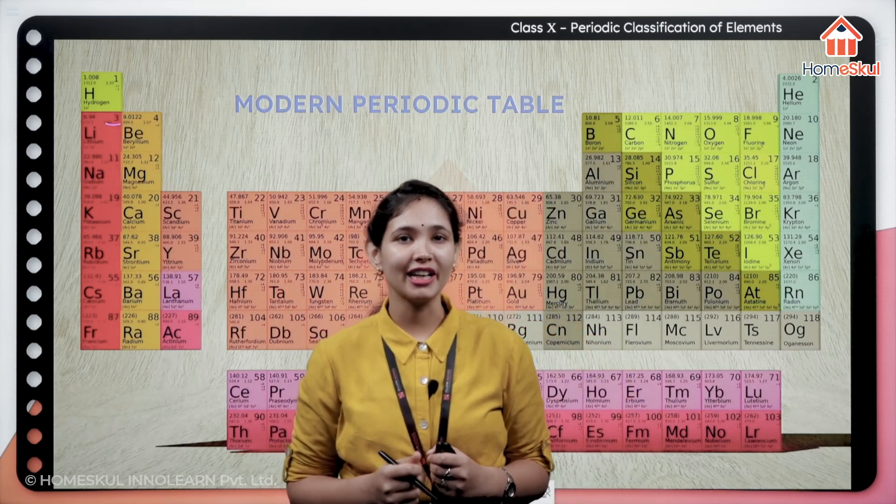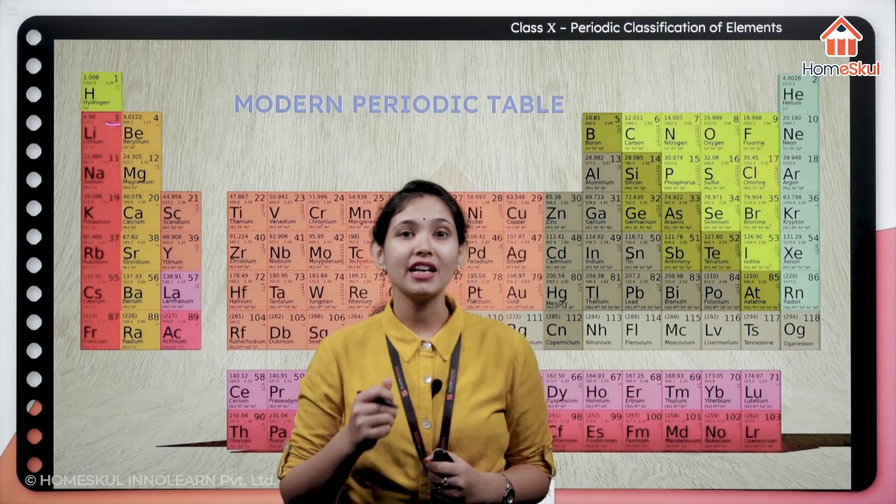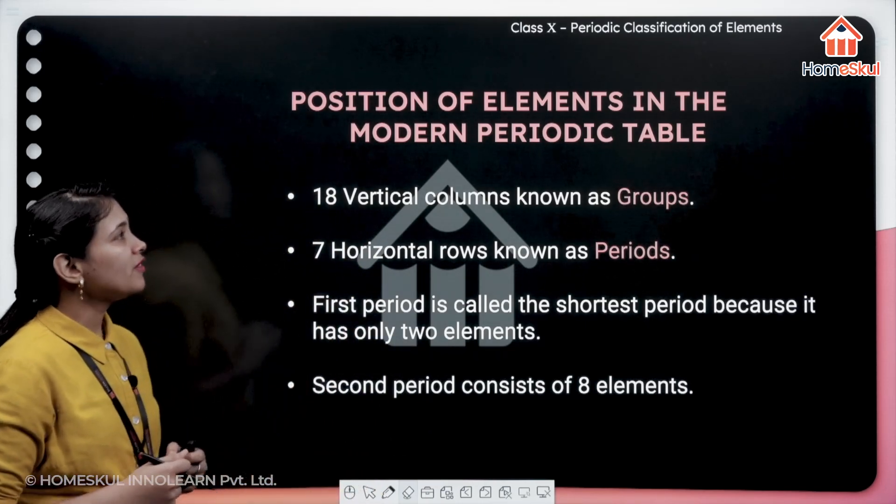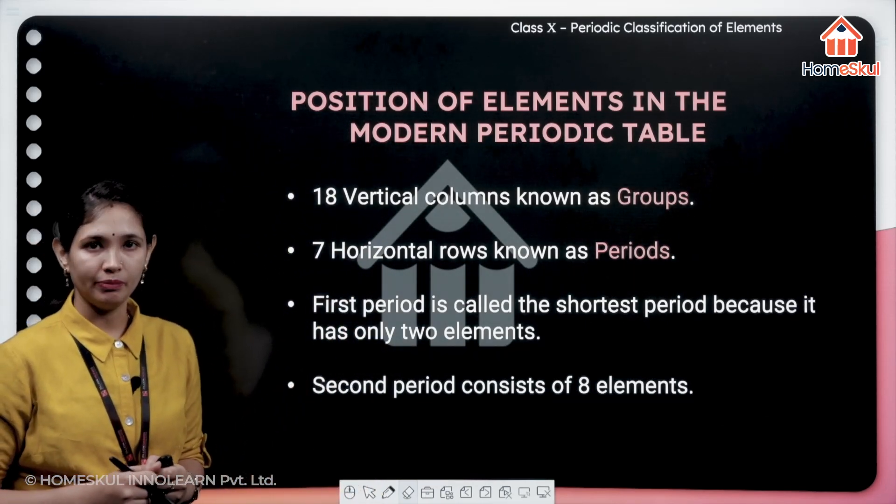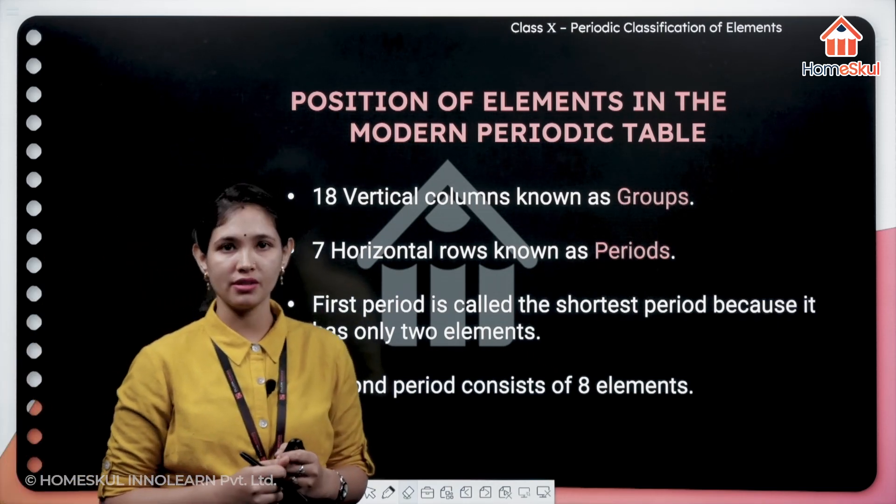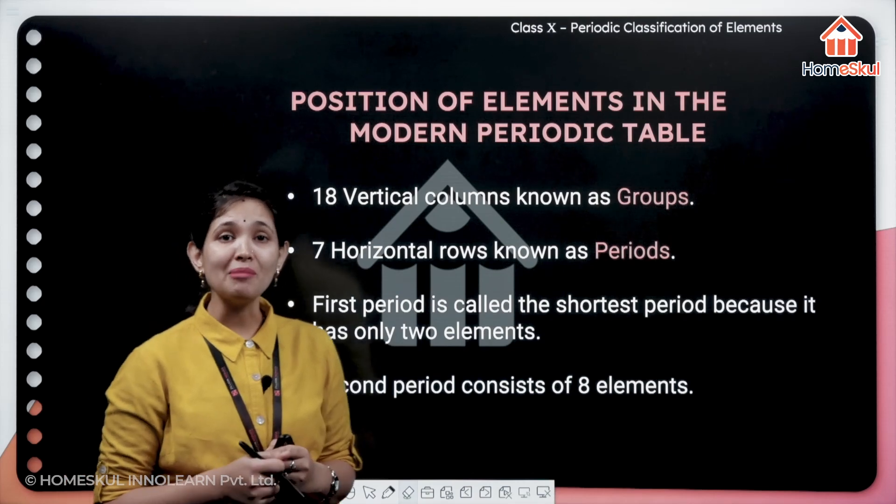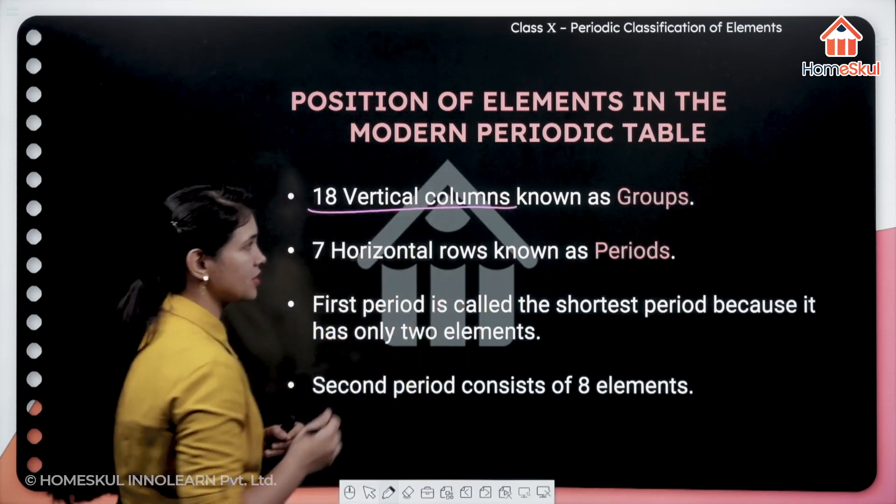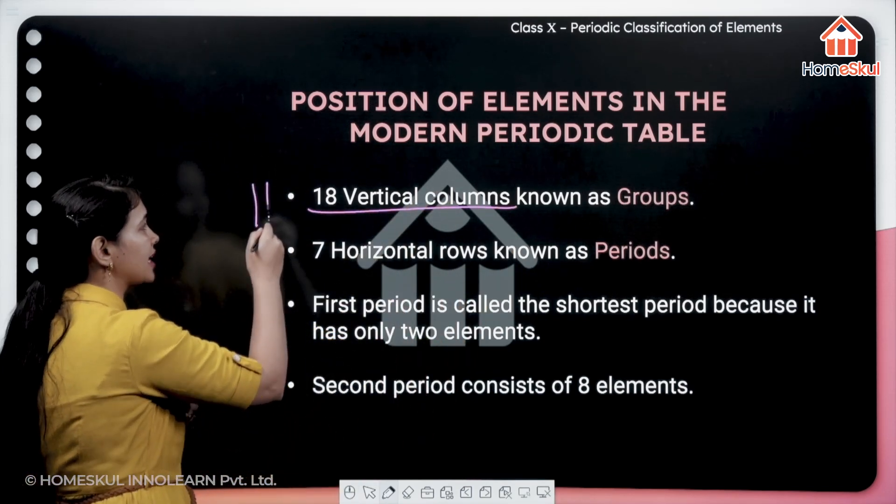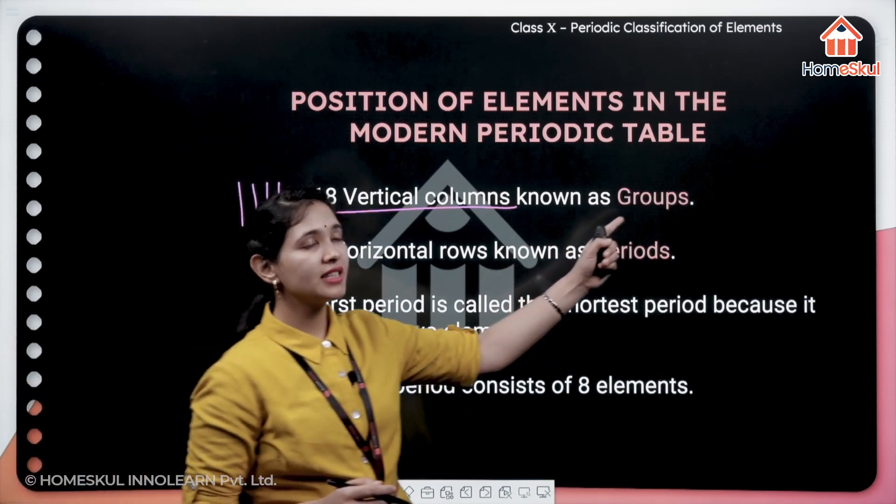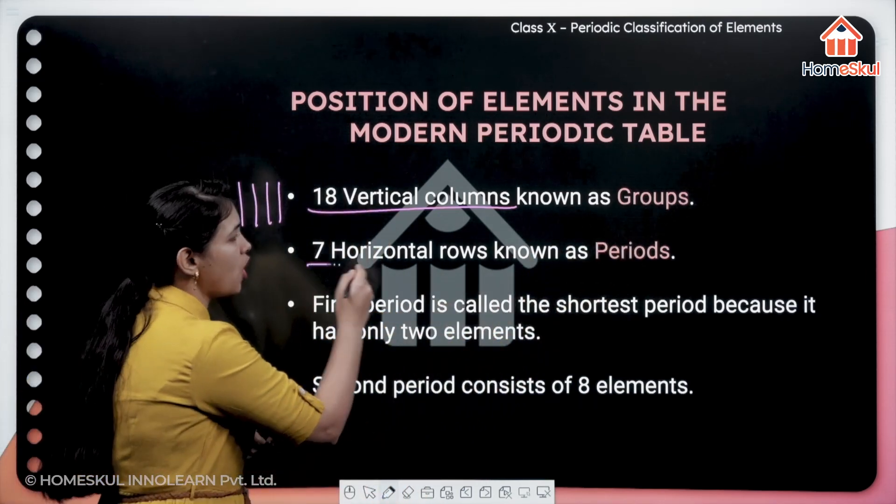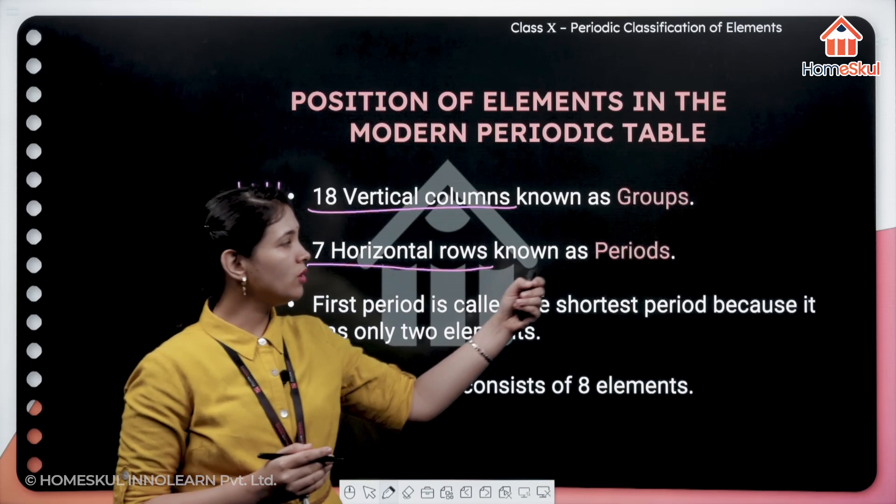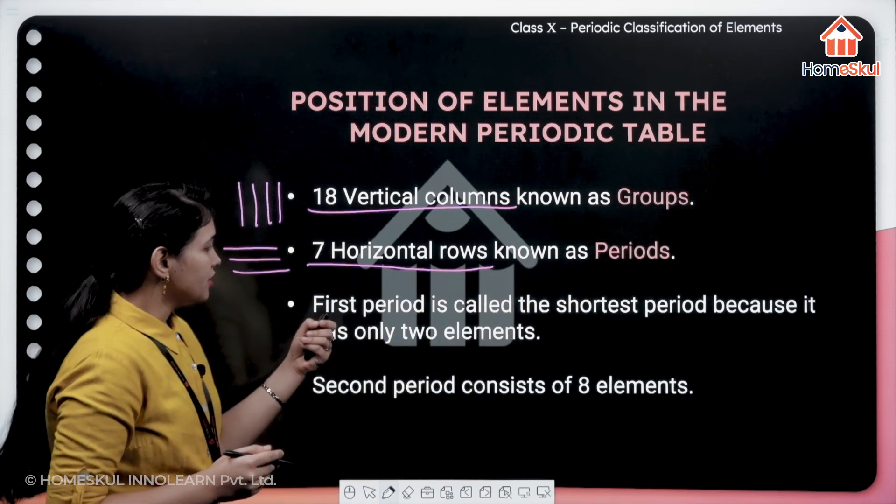Just see positions of elements in the modern periodic table. How has he decided the positions? As I have told you, by atomic number. So when he did that, you can see 18 vertical columns, and they were called as groups, and 7 horizontal rows, the 7 horizontal rows which he has told are periods.